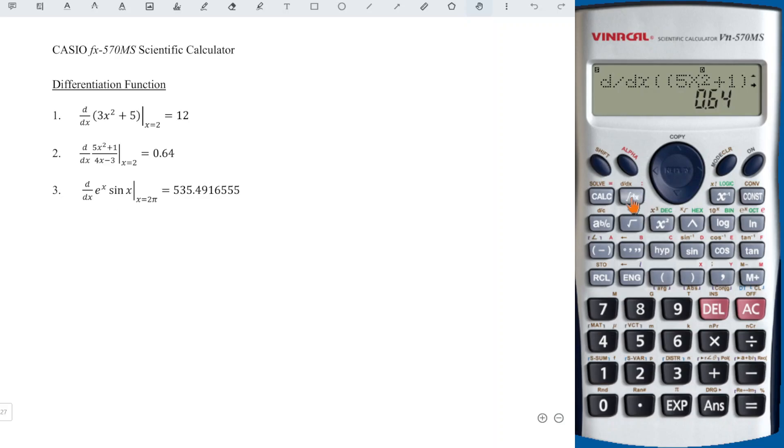Shift, integrate to obtain differentiate. Shift, ln to obtain e to the power. So we have alphabet x times function sine x. We have to bear in mind that the calculator uses degrees, but what we need here is in terms of radians. So we should convert to radian. How to convert?